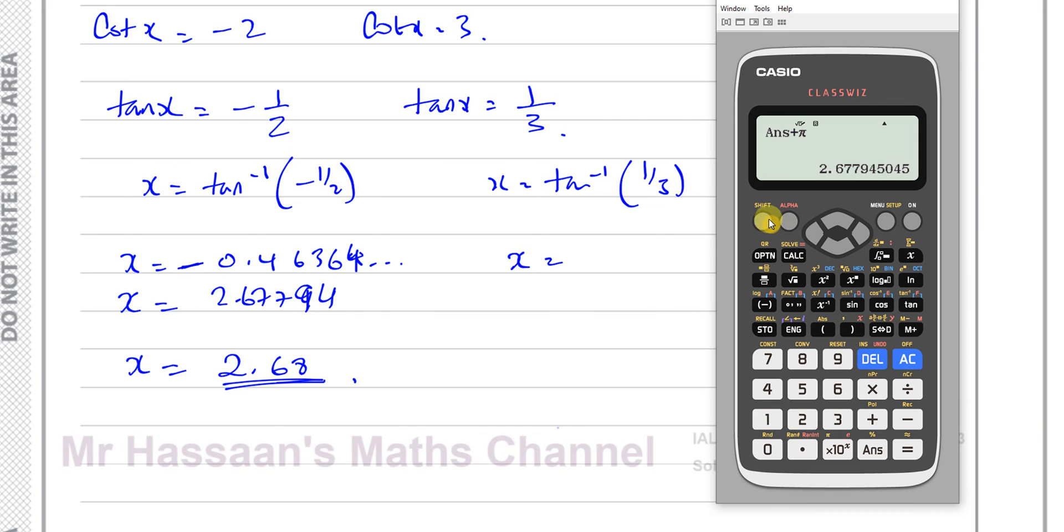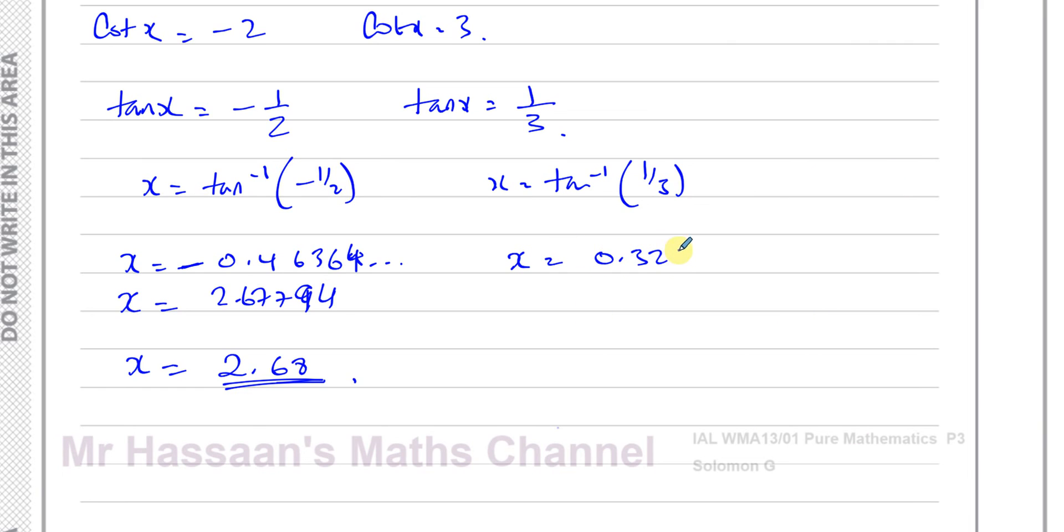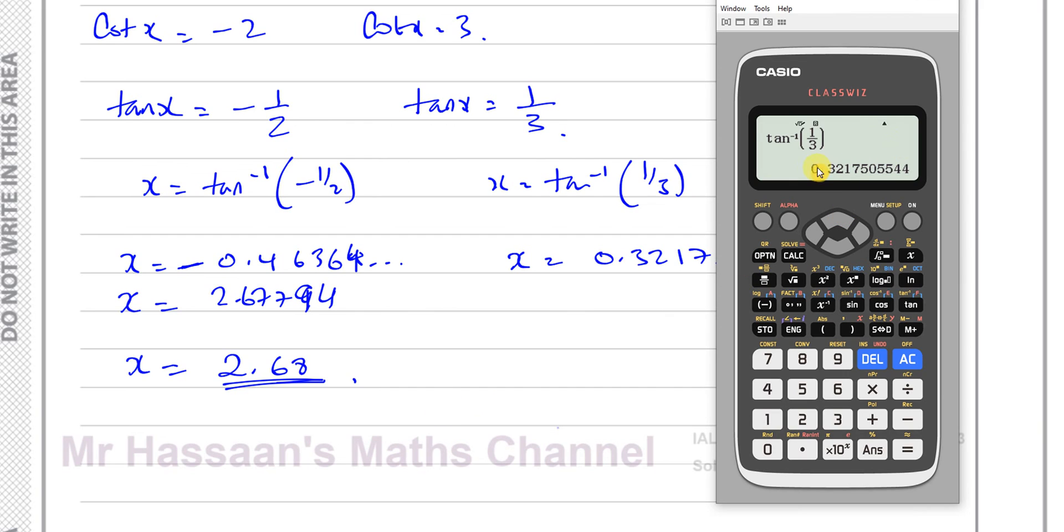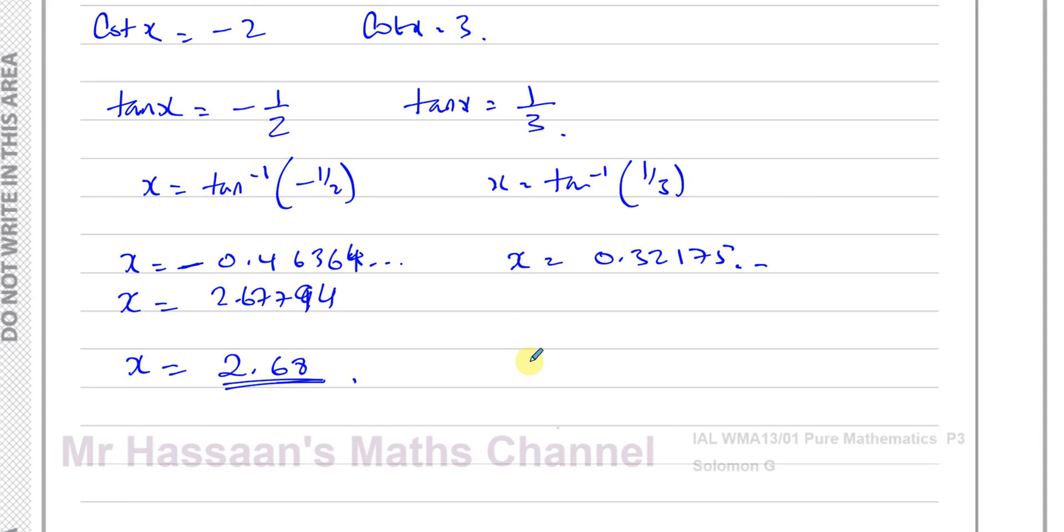So I'll do inverse tan of positive 1 third. Inverse tan of 1 over 3, and that should give us our answer, which should be in the range, 0.32175. Just make sure of that. 3, 2, 1, 7, 5. That's right, it goes on. So therefore, x is equal to, to two decimal places, 0.32. If I add pi or take away pi, I'll be outside of my range. So these are the two answers. There's x equals 2.68 and x equals 0.32.